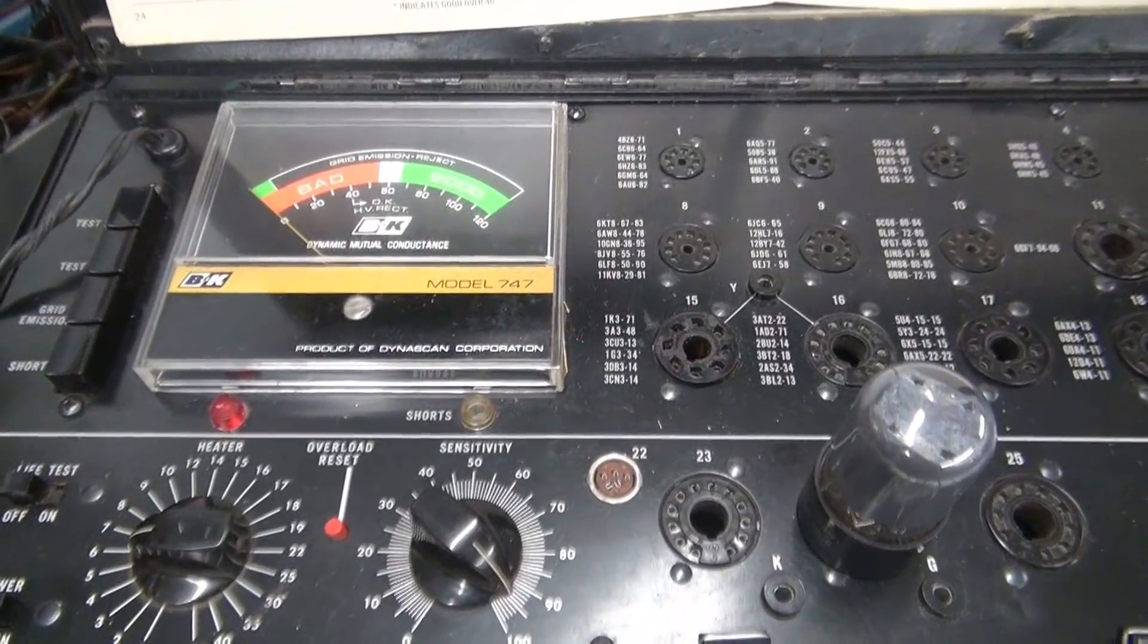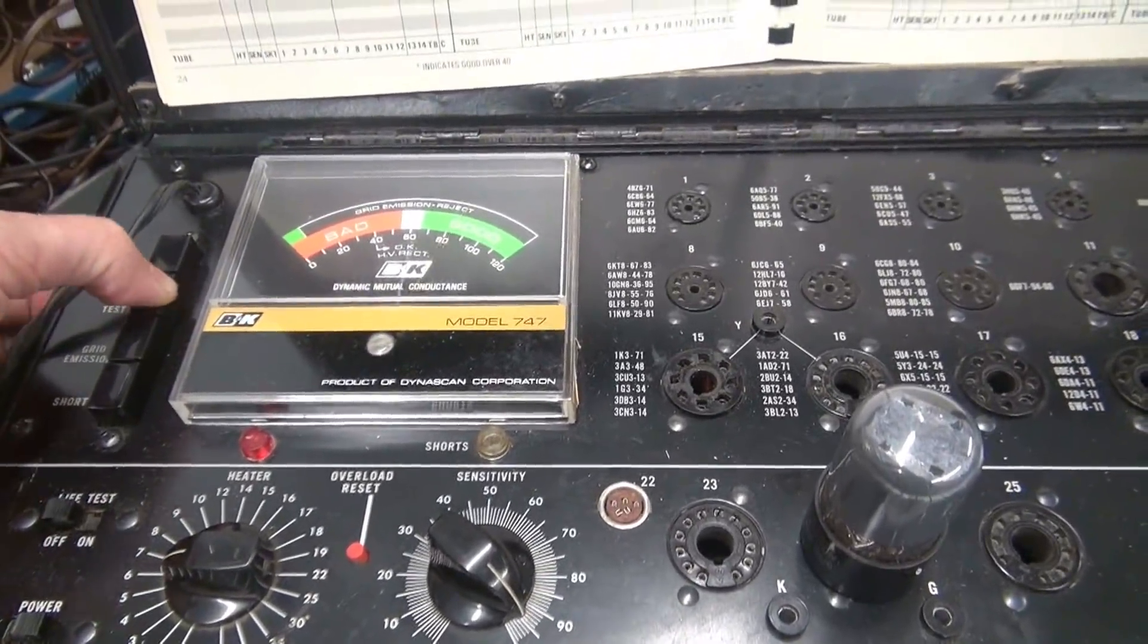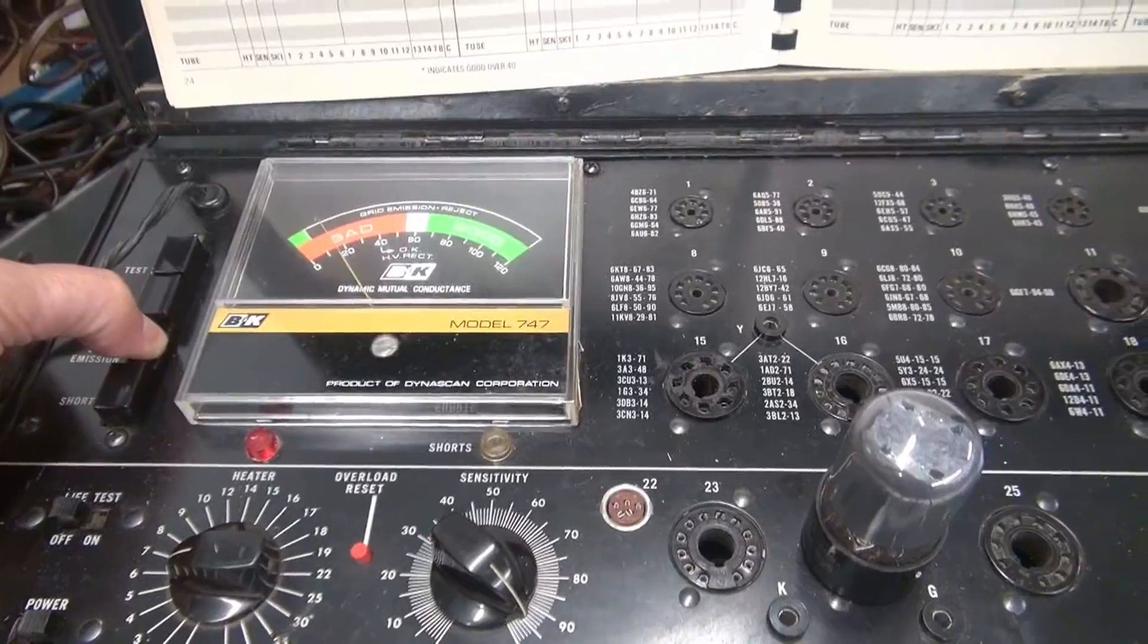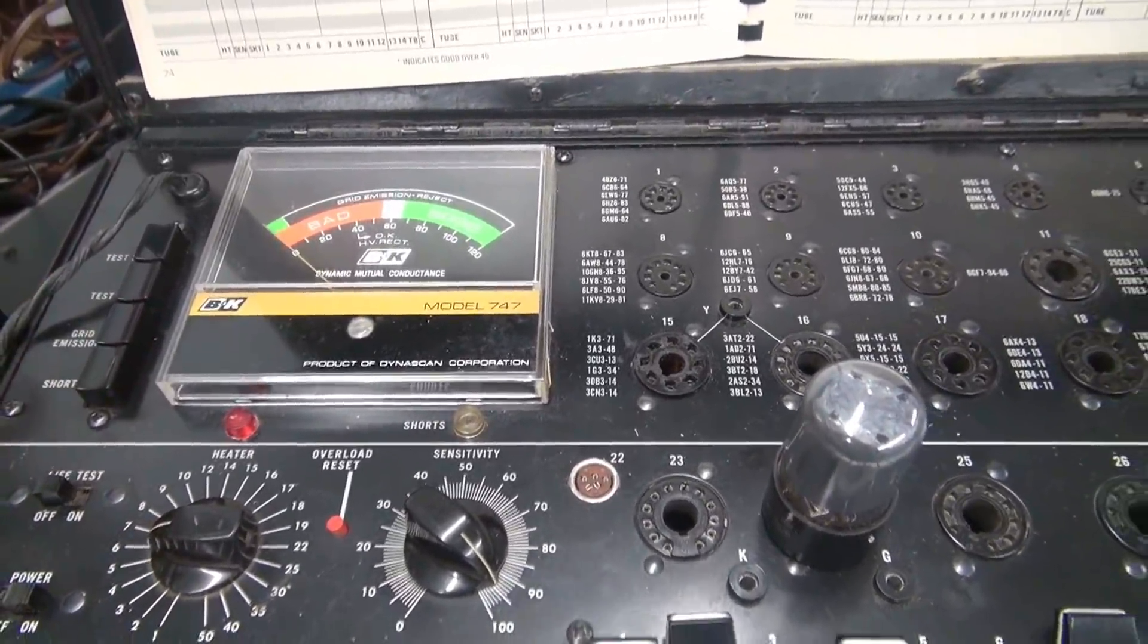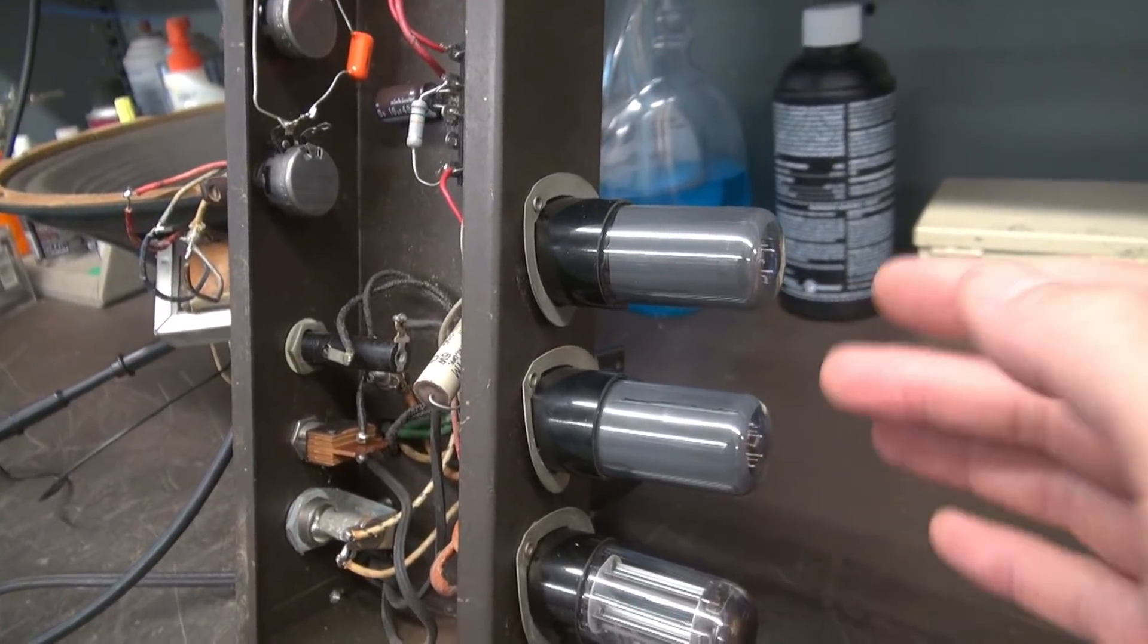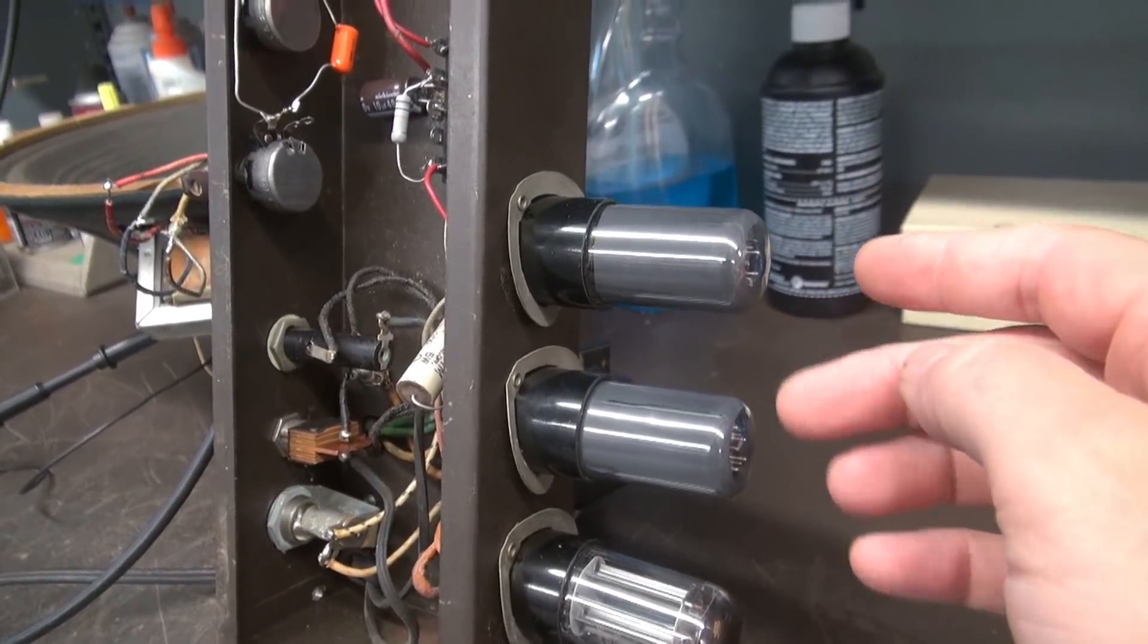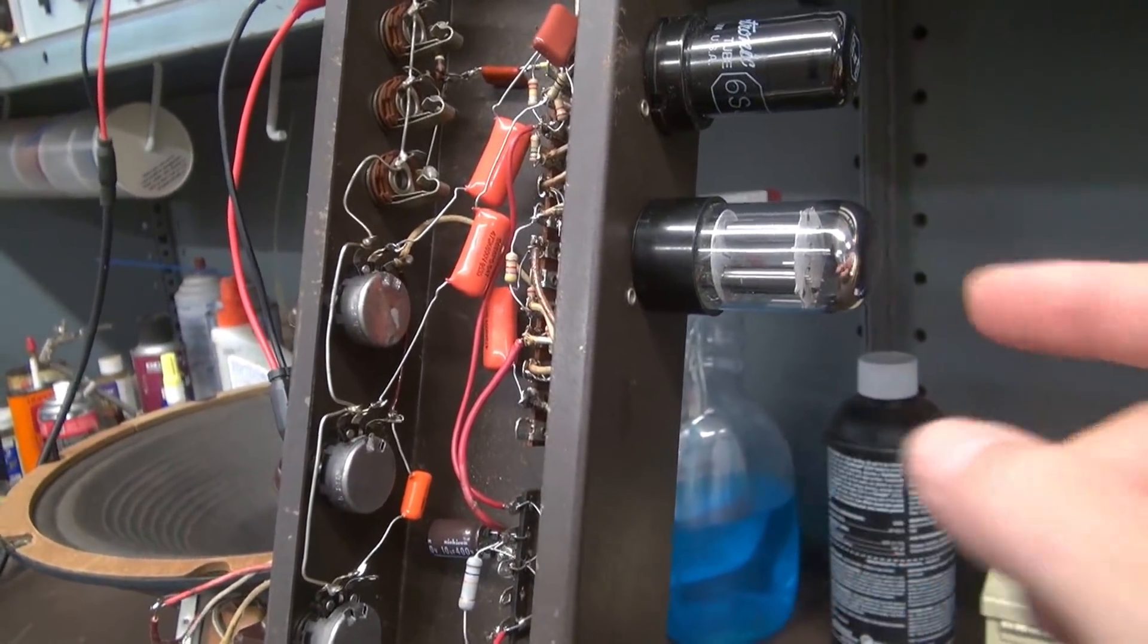Here's the inverter tube, the 6SL7, under test. You can see it has good gain. However there is some grid emissions and a little bit of a short. So we'll swap it out. So the RCA 6V6s checked perfect. I'm going to leave them installed. I have a new Sylvania 6SL7 inverter installed.